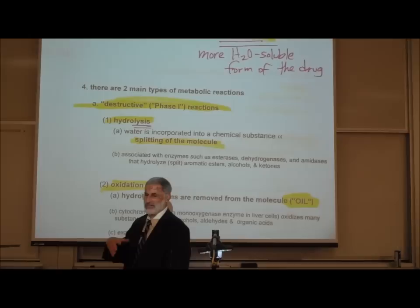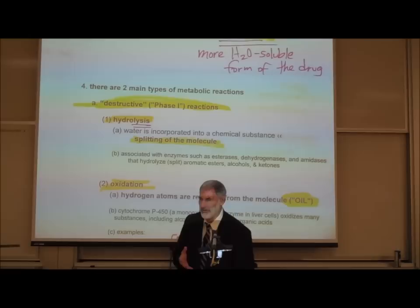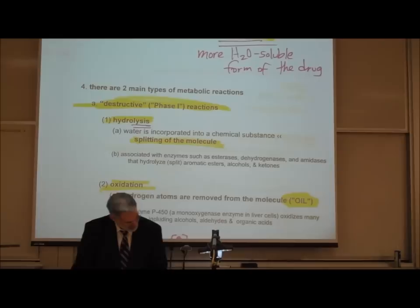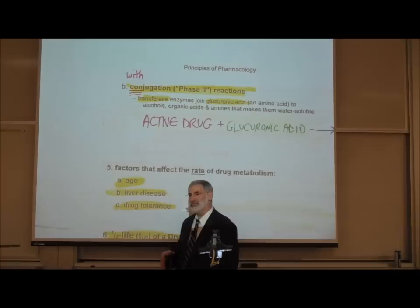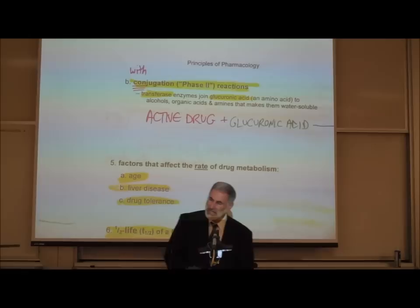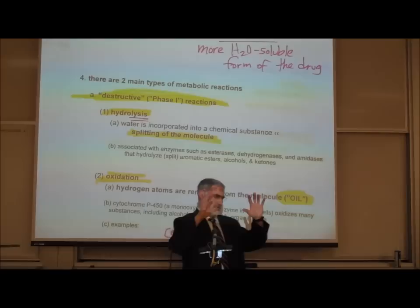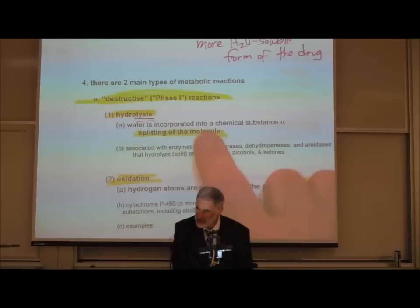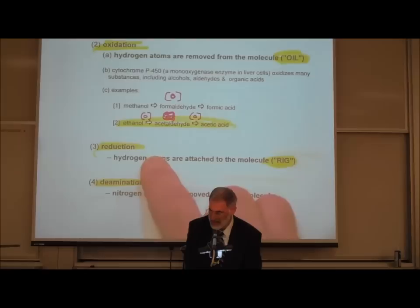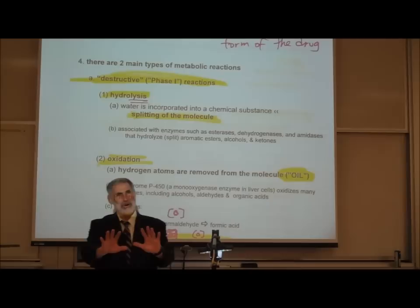There are two major types of metabolic reactions in the liver. There are the so-called destructive reactions, or phase one, and on page B8 at the top, the conjugation reactions, or phase two reactions. The phase one reactions include hydrolysis, oxidation, reduction, and deamination reactions.